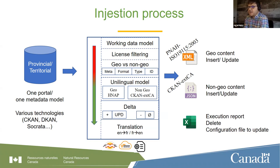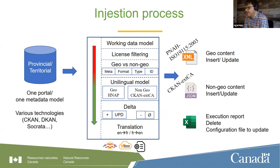Once we have split the geo and non-geo content, we correlate the metadata to the desired metadata models — HNAP or the CKAN Canadian extension — and we do this through lookup tables.